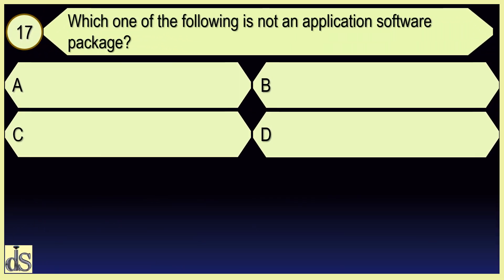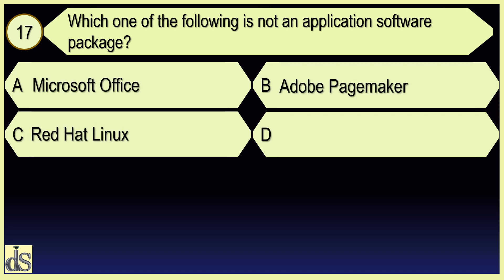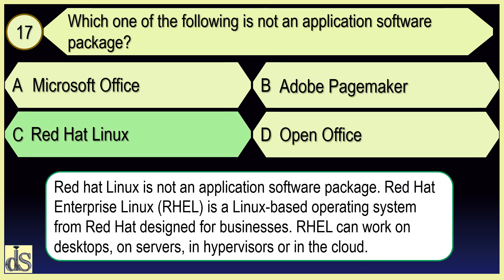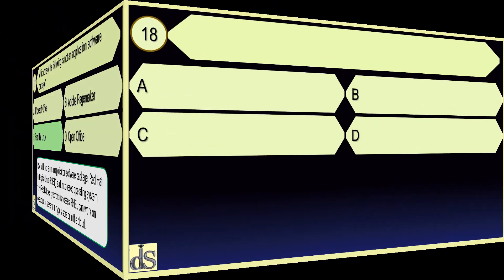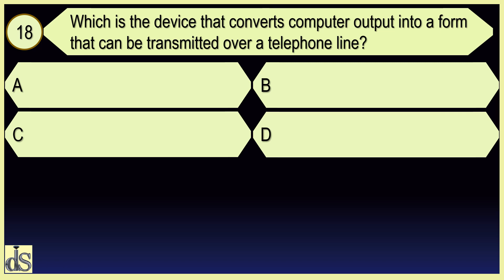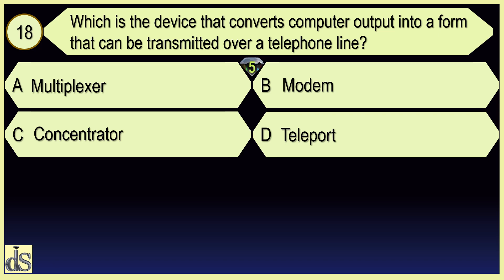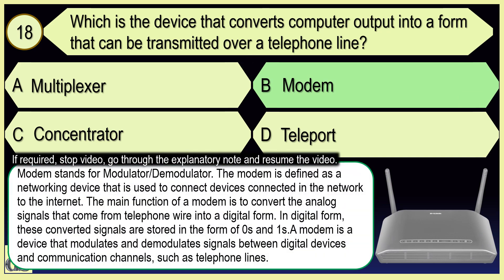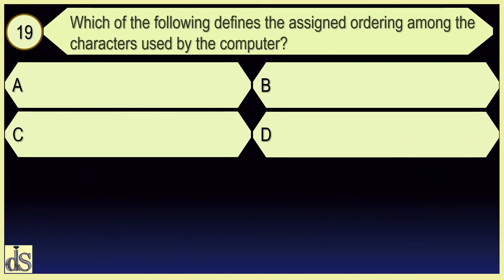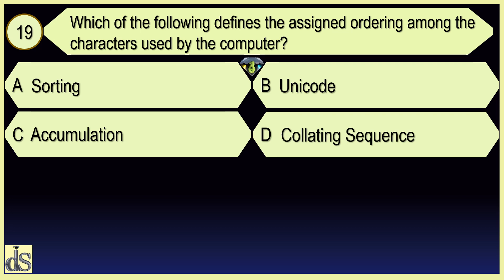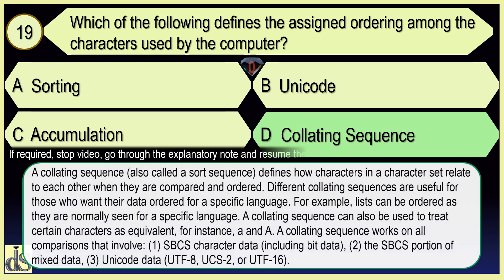Which one of the following is not an application software package? Red Hat Linux. Which of the following defines the assigned ordering among the characters used by the computer? Collating Sequence.